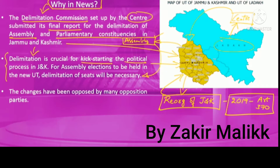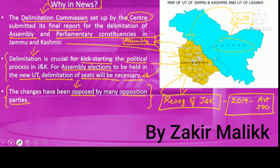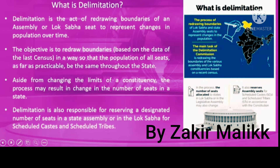To hold assembly elections for the Union Territory of Jammu and Kashmir, the delimitation of assembly and parliamentary constituencies was essential. Now this process has been completed but the changes made to the constituencies have been strongly opposed by opposition parties. In this context, we first need to understand what delimitation is.